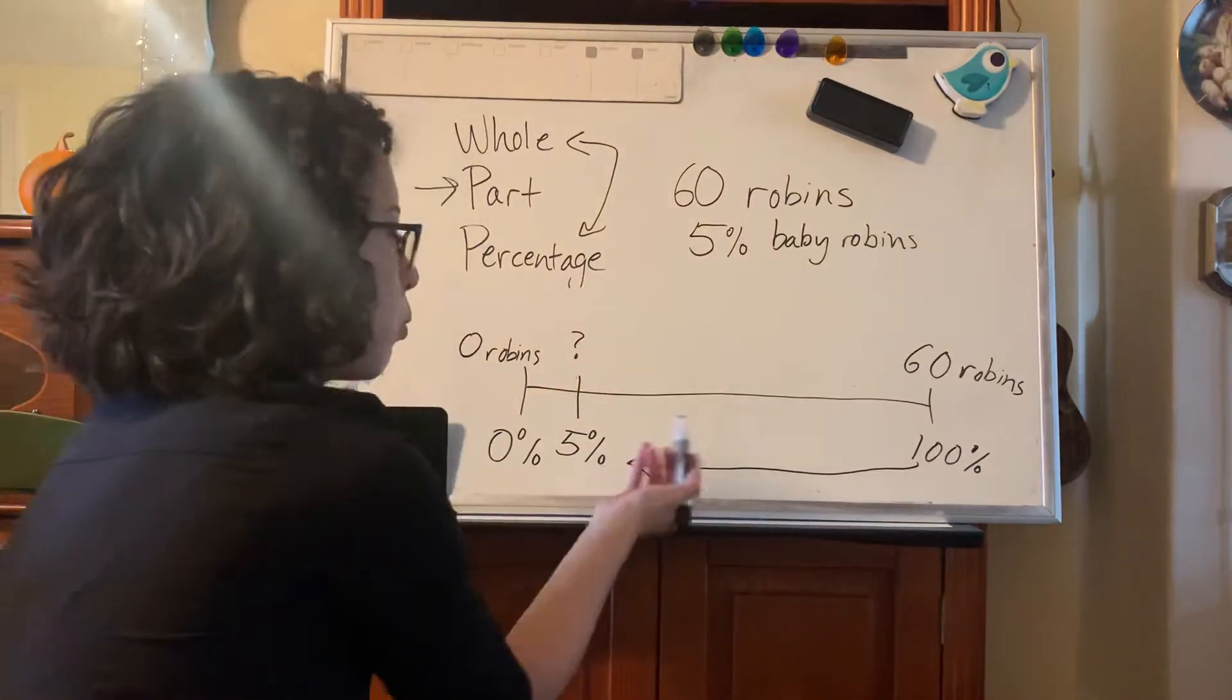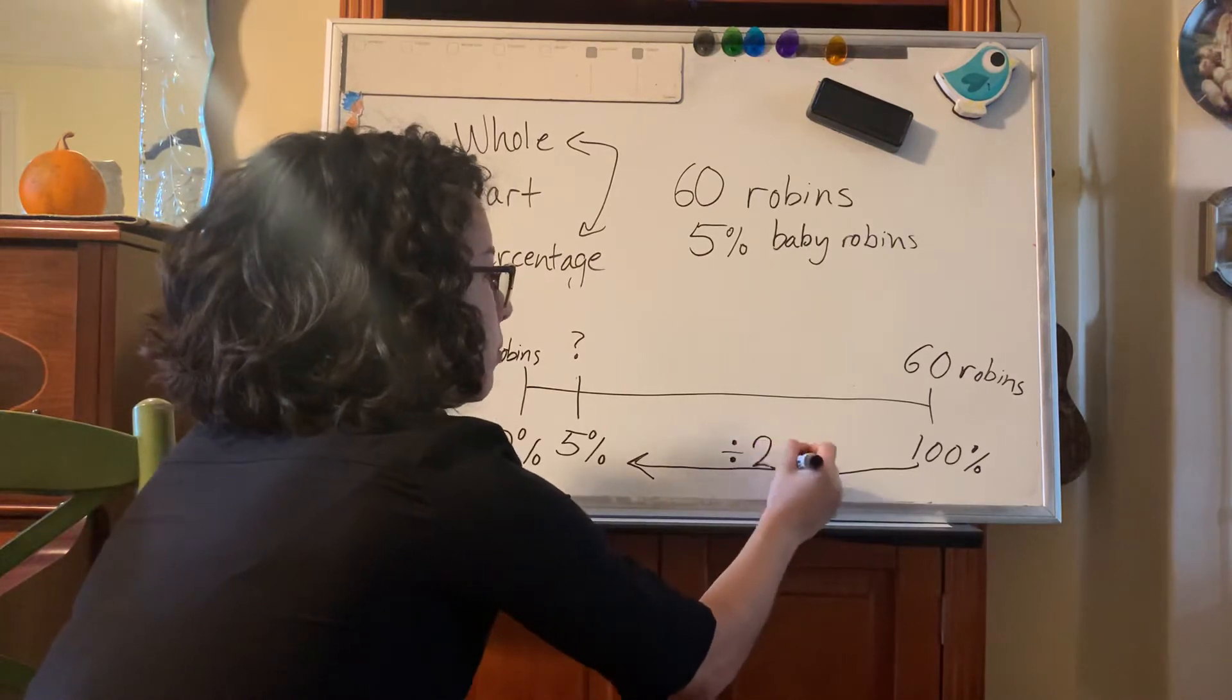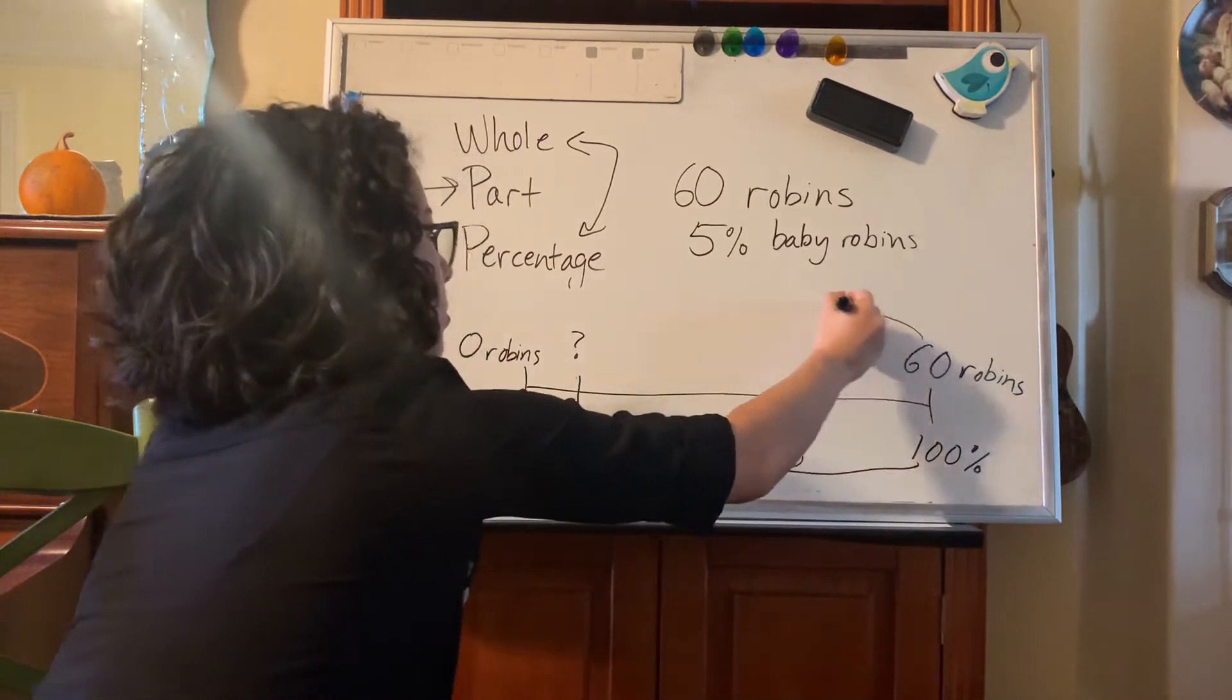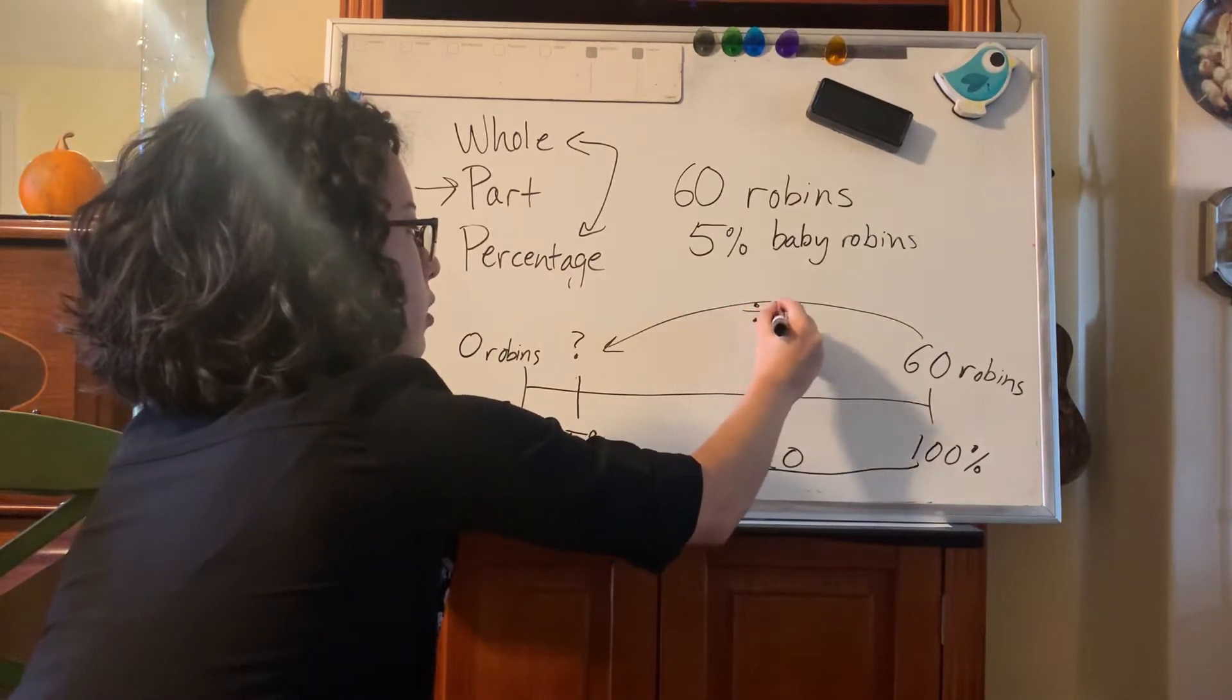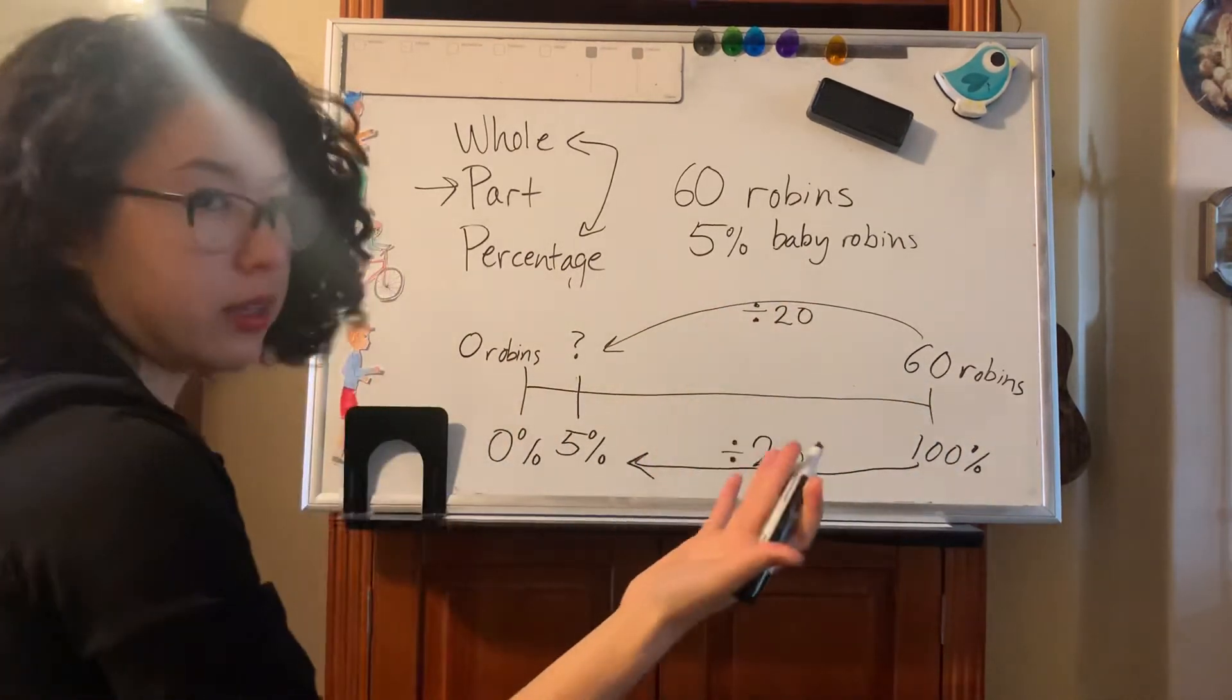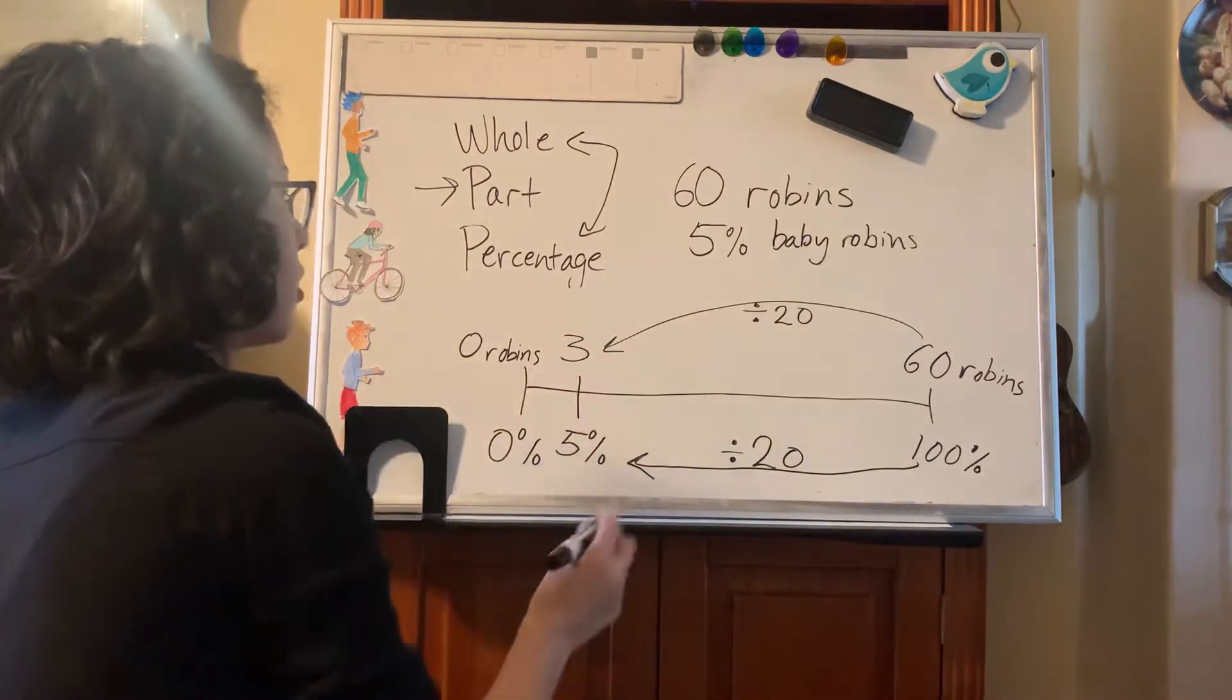So 100 divided by what is 5? 100 divided by 20. So let's do that same operation here. 60 divided by 20 is 3. So we've got there are three baby robins. Nice.